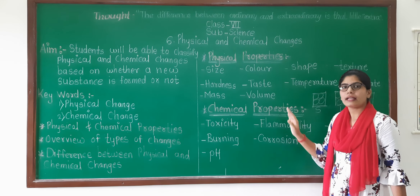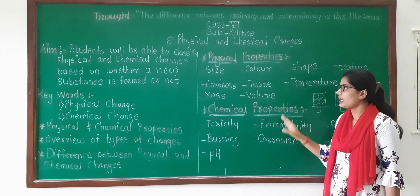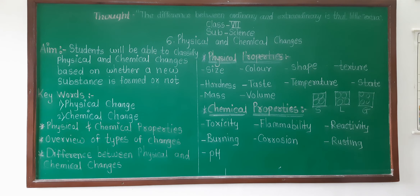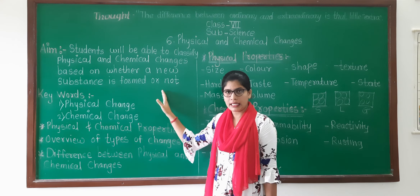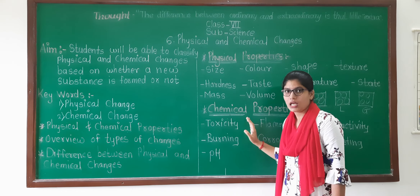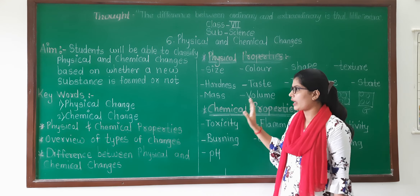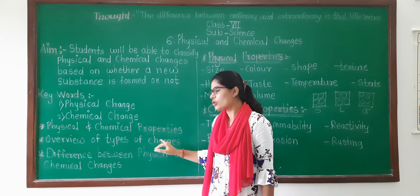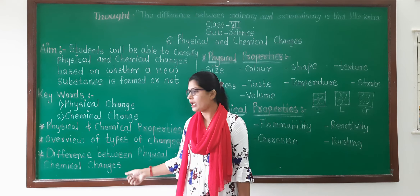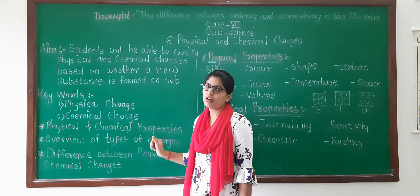So, understood the Physical Properties and Chemical Properties. See the Physical and Chemical Properties and write them down in your notebook. Based on these properties, we are going to learn the types of changes and the difference between Physical and Chemical Changes.